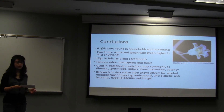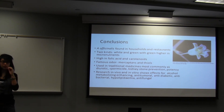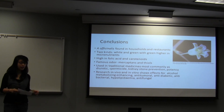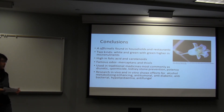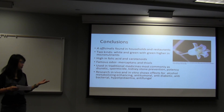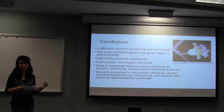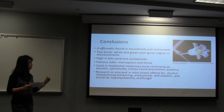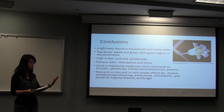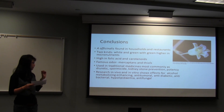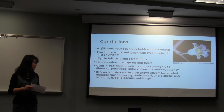In conclusion: asparagus is something you can find anywhere — it's on your dinner table, very common, and a little pricey for the reasons we listed. There are two kinds: white and green. The white one tastes a bit milder and softer, while the green one has higher nutrients. It's high in folic acid, so women who are pregnant should be eating lots of it. Carotenoids are really good for the antioxidant parts, and its famous odor comes from the sulfur compounds produced during urination. It's traditionally used for medicines such as diuretics, spermicide, kidney stone prevention, and potency — interestingly, the potency and spermicide are kind of opposite effects. In vivo and in vitro studies show it's great for alcohol metabolism, antitumoral, anti-diabetic, antibacterial, hypoglycemic, and antifungal activity. More research will be done in the future about the base.